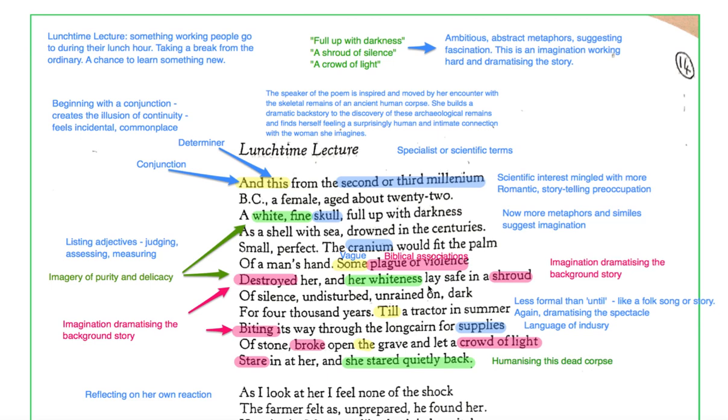Destroyed her, and her whiteness lay safe in a shroud. It's interesting, her whiteness, not her body, lay safe in a shroud, her whiteness. Again, imagery of purity and delicacy. It's making her seem kind of valuable and pure. Her whiteness lay safe in a shroud. A shroud is also, also has kind of religious connotations to do with burial and burial rites. So she's dramatizing this story with biblical language, with imagery of purity and delicacy, with emotive language and abstract metaphors drowned in the centuries.